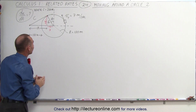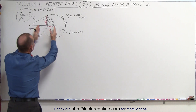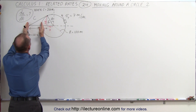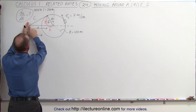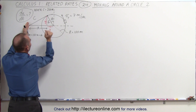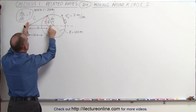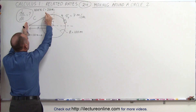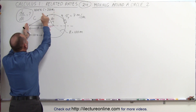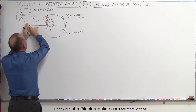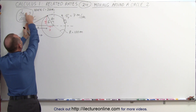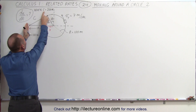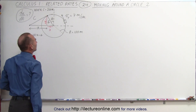That's quite a bit of information. If the radius is 100 meters and this distance is 100 meters, then this spot is 200 meters away from the center of the circle. When this object is right here 200 meters away from this point, we want to know what the rate of change of this distance is at the moment when c equals 200 meters.